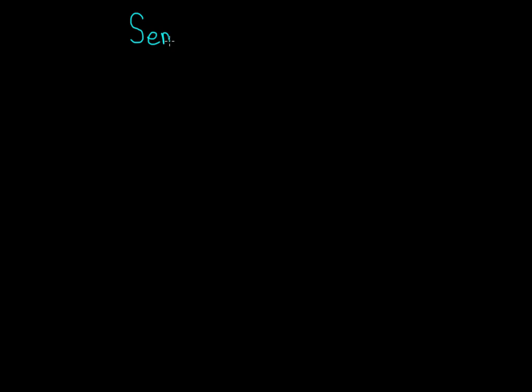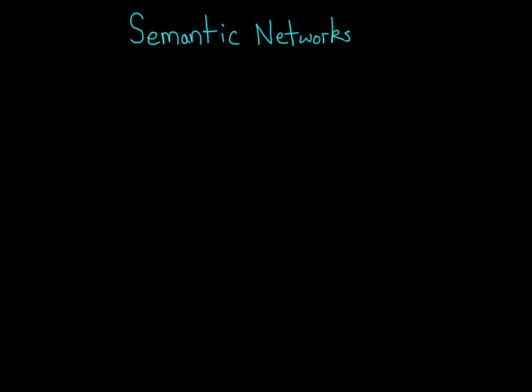In order to solve problems and make decisions, you often have to access information already stored in your brain. But how is that information stored? There are a lot of possibilities, but the one we're going to focus on in this video is the semantic network approach, which argues that concepts are organized in your mind in terms of connected ideas.